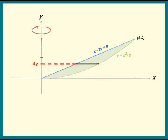The next step is to label the endpoints of the strip. Which coordinate do the two endpoints have in common? The y-coordinate. We're going to fill in the x-coordinates of those two points using just y's. Looking at the point on the blue line, x minus 2y equals 0, x is always 2 times y. Sliding over to the parabola, x squared equals 8 times y, so x is the square root of 8 times y.